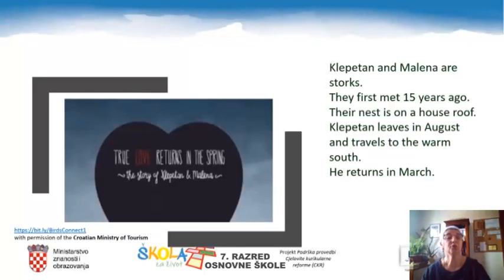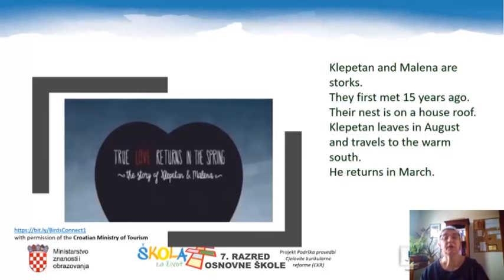I hope you enjoyed listening to the story about Klopetan and Malena. Let's see if you have all the sentences completed. Klopetan and Malena are storks. They first met 15 years ago. Their nest is on a house roof. Klopetan leaves in August and travels to the warm south. He returns in March.